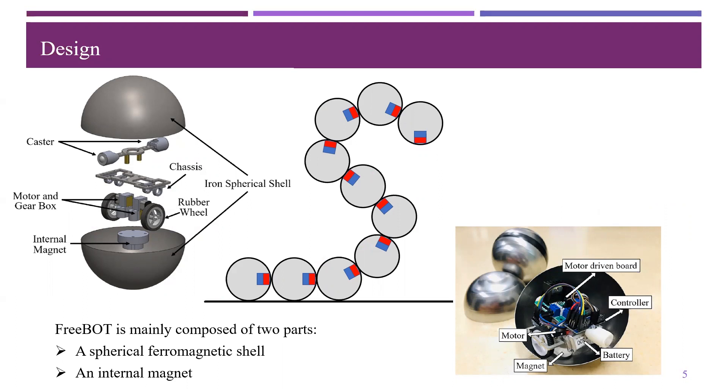FreeBot is a special spherical robot which is mainly composed of two parts: a spherical ferromagnetic shell and the internal magnet. Since the internal magnet can attract the whole ferromagnetic shell of other robot, FreeBot can be connected freely at any point on other robots.